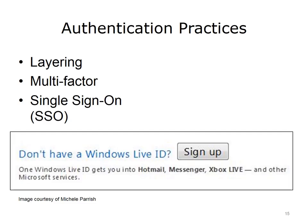Layering is a best practice for authentication. This requires users to have multiple authentications to gain access, and the authentications should be of different types. For example, to access a secure area, a user may need a key to unlock a door and enter a man trap, then know the code for a cipher lock and provide a fingerprint scan — requiring something they have, something they know, and something they are. There are also single sign-on systems where a user logs in once and can access other resources, with authentication credentials passed between systems. Microsoft Windows Live ID is an example.